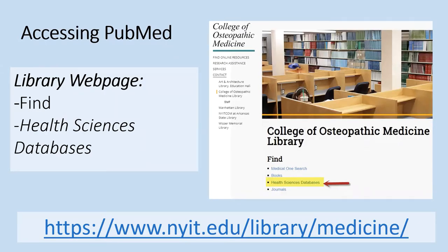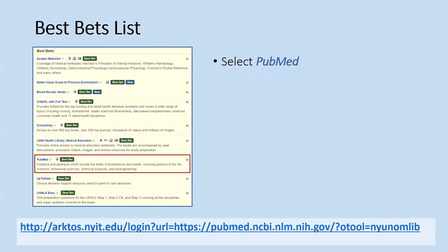To get to PubMed, go to the library website at www.nyit.edu/library/medicine and click on the health sciences databases link. From there, go down the best bets list and click on PubMed. You can also just type in the URL, but it's a very long URL, so it's advisable to just click on the PubMed link.